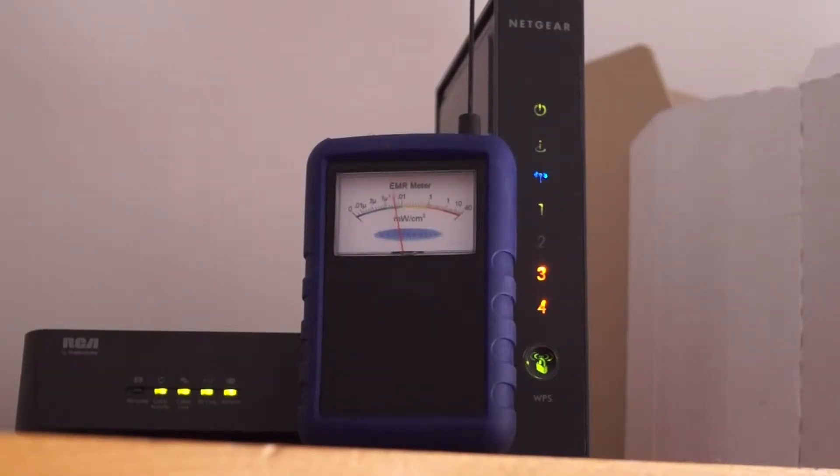Here we have a Netgear wireless N router running at 2.4 and 5 GHz with a modem from RCA. The primary emitter is the Netgear router and as you can see on the EM2 meter, there's pulsed communications going on continuously ranging from about 5 microwatts per square centimeter up to as much as 0.1 milliwatts per square centimeter depending on what it's communicating.